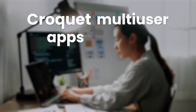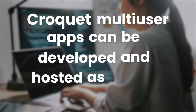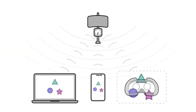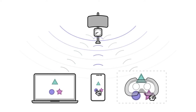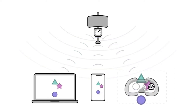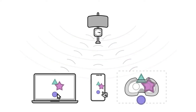Croquet multi-user apps can be developed and hosted as simple static websites. Instead of running code on a server, Croquet runs the code on each client. Croquet's Edge Reflector orders the messages to clients so that they execute in sync, ensuring everyone stays consistent while keeping latency ultra-low.